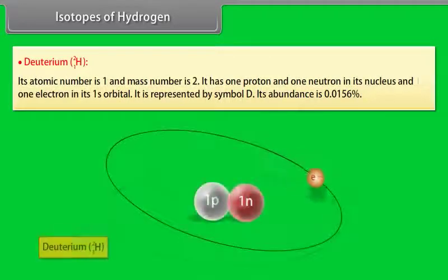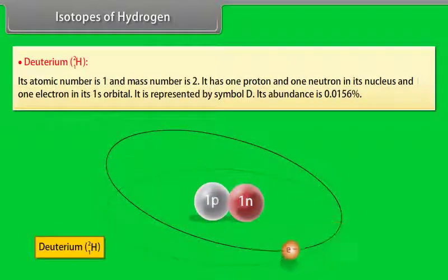Deuterium: Its atomic number is 1 and mass number is 2. It has one proton and one neutron in its nucleus and one electron in its 1s orbital. It is represented by symbol D. Its abundance is 0.0156%.